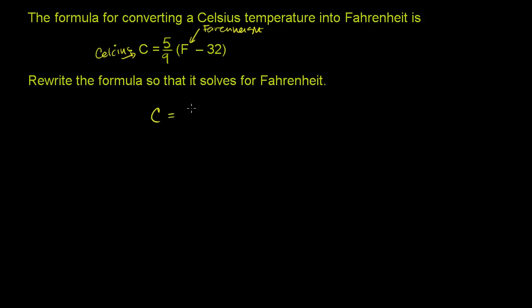So I'll just rewrite it. C is equal to 5 ninths times F minus 32. And we want to solve for F.